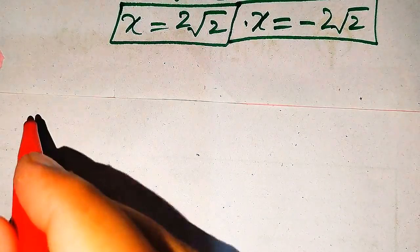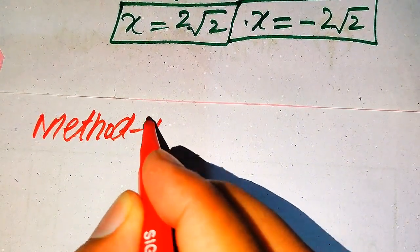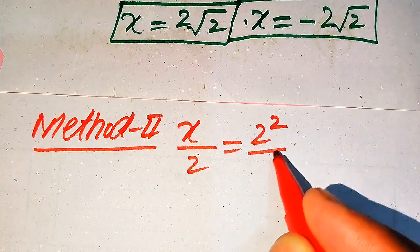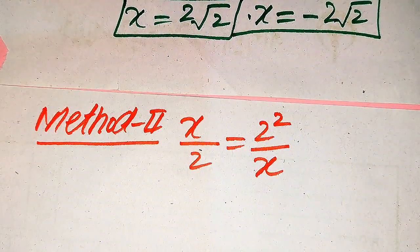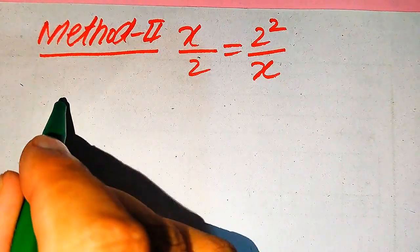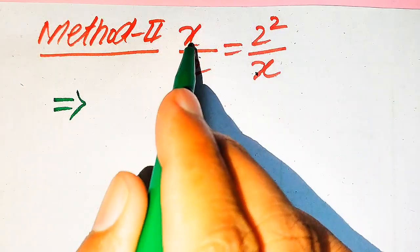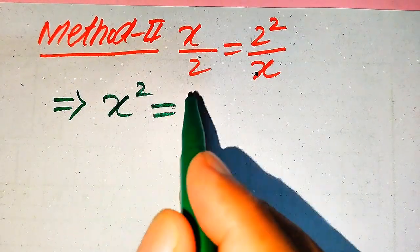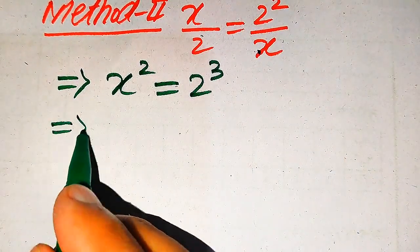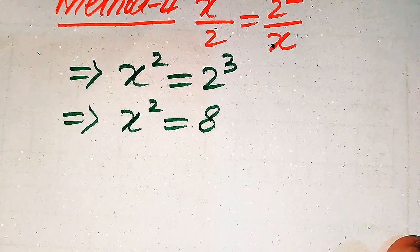Now we solve this problem using a second method. The given equation is x divided by 2 equals 2 squared divided by x. The first step is the same — we cross multiply: x times x gives x squared, and 2 times 2 squared gives 2 cubed. We know that 2 cubed equals 8, so we have x squared equals 8.